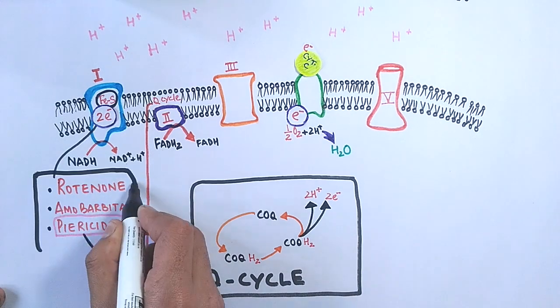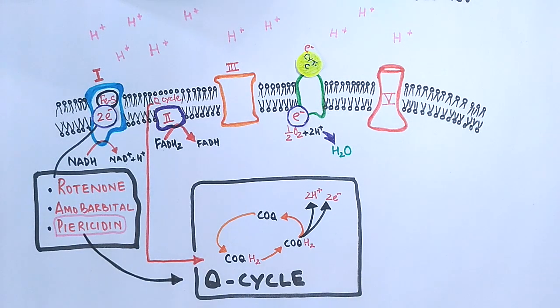It competes with QB for binding sites in complex 1. So it must be noted here by the inhibition of complex 1, the electron transport chain is not halted completely because the electrons can flow from complex 2 to enter into the chain also. So what's the effect of this inhibition? From this inhibition we get the decreased synthesis of ATP and also the oxygen consumption is decreased.